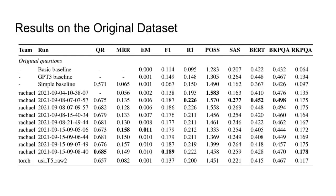We gave participants the option to use either the original dataset or, if they wanted to focus on the later steps of the pipeline, start with the human rewritten questions. This table shows results for the former case, for which two teams participated. For question rewriting, the simple baseline returns the question as is and is outperformed by every run of the two teams. Both teams achieved similar scores, with Team Rachel having a slight advantage, indicating that T5 might be a good starting point for further improving question rewriting. For passage retrieval, nearly all submitted runs improve upon the simple baseline. Interestingly, the run with the highest QR does not reach the highest MRR. Indeed, the Pearson correlation of a run's QR and MRR for Team Rachel is minus 0.35, indicating a weak negative correlation.